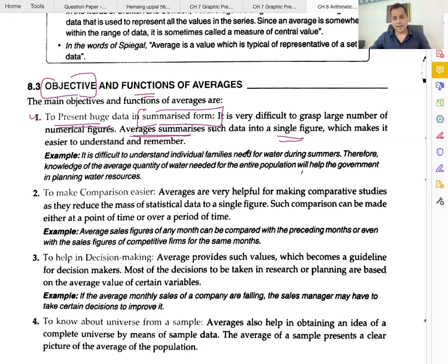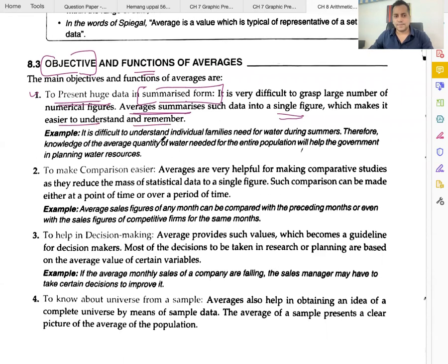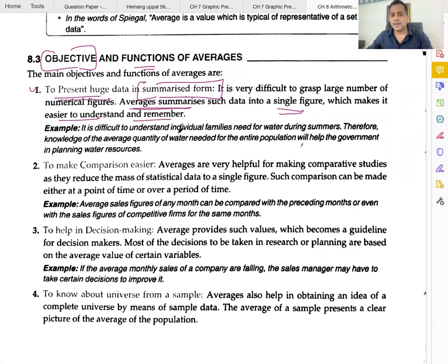Average summarizes the data into a single figure, which makes it easier to understand and remember. For example, it is difficult to understand individual families' need for water during summers. Each person in the house - a small child, someone who exercises - water consumption can be different for each person, but the family consumption average provides a single useful figure.